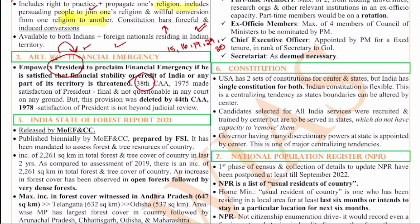The 38th constitutional amendment act made the satisfaction of the President final, but the 44th amendment act deleted this provision. Judicial review is part of the basic structure and every pronouncement of the government can be checked by the judiciary for breach of the constitution. So the satisfaction of the President is not beyond judicial purview, because judicial review is part of the basic structure.